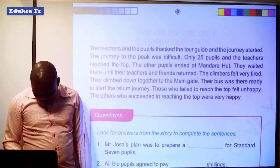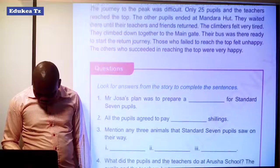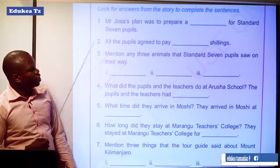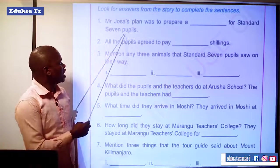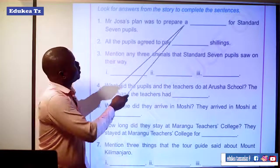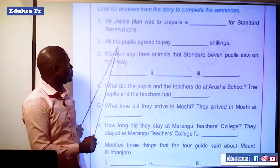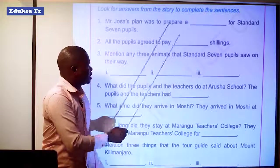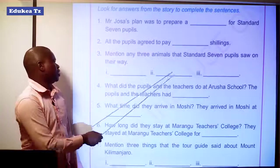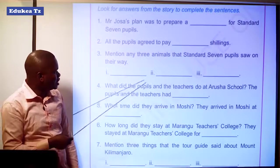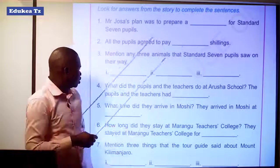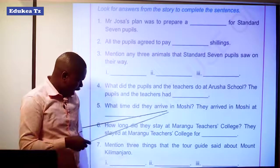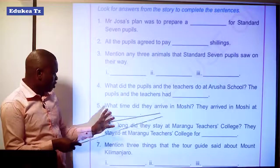You have a task to complete. We have to look for answers from the story to complete the sentences. Question 1: Mr. Josa's plan was to prepare a trip for Standard 7 pupils. Question 2: All the pupils agreed to pay how many shillings. Question 3: Mention any 3 animals that Standard 7 pupils saw on their way. Question 4: What did the pupils and the teachers do at Arusha school? We have to answer: the pupils and teachers had lunch. What time did they arrive in Moshi? They arrived in Moshi at 4 o'clock.